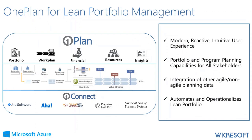OnePlan focuses on five major feature sets: portfolio planning, work planning, financial, resources, and reporting and insights. We're delivering a solution for lean portfolio management, and if you happen to be working on any other solution, we can integrate all of that data into OnePlan. The most important part of the SAFe solution is that we're trying to automate and operationalize lean portfolio within your organization — following the guidance for achieving lean portfolio management and business agility.